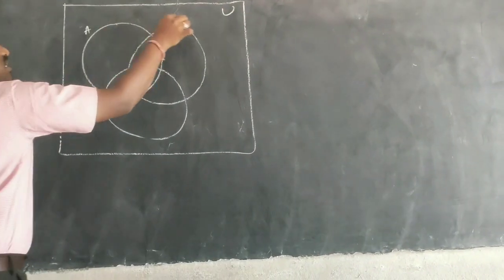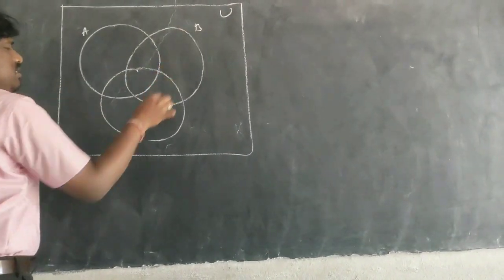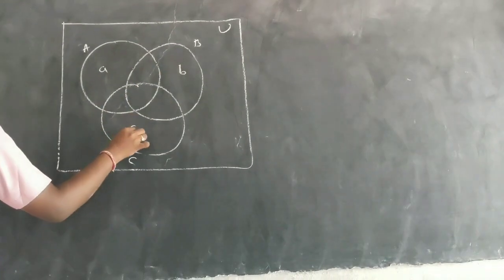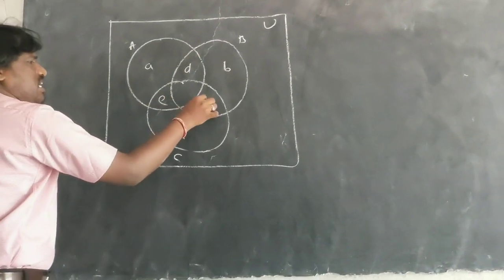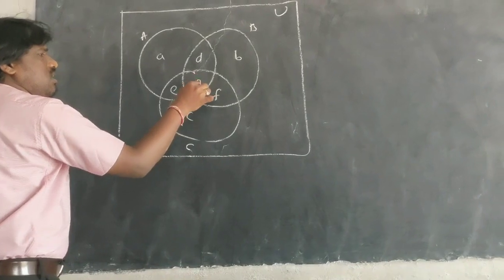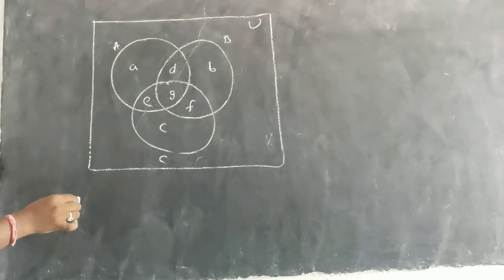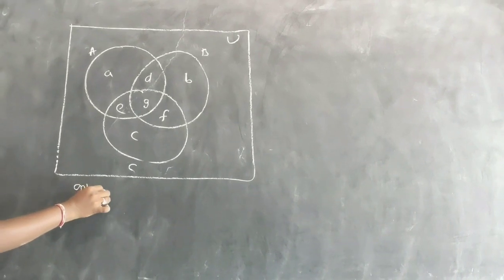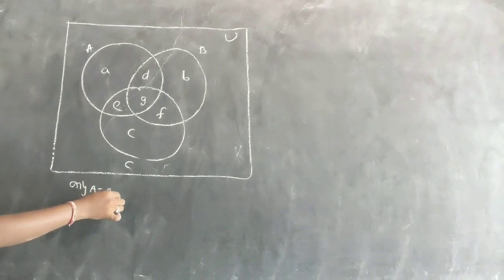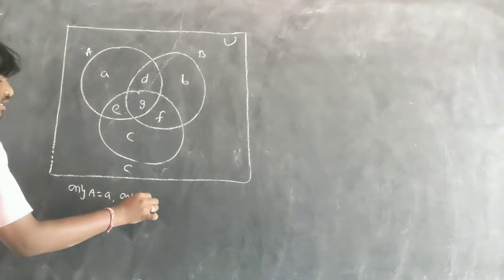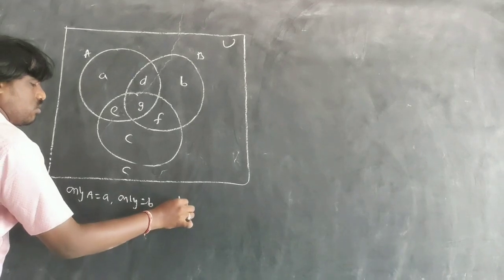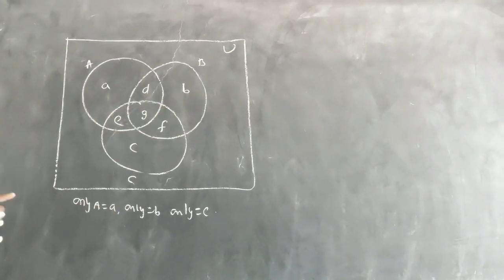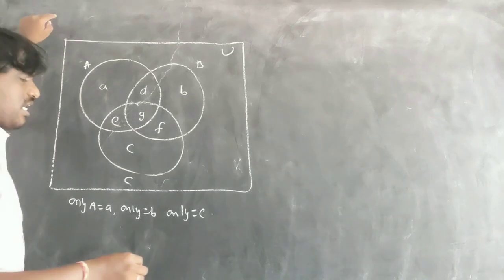Let us say this is A, this is B, this is C. You have taken regions A, B, C, D, E, F, G — I already explained you. Just recalling here: only A, only B, only C — I have already explained everything. One thing I forgot to tell you.